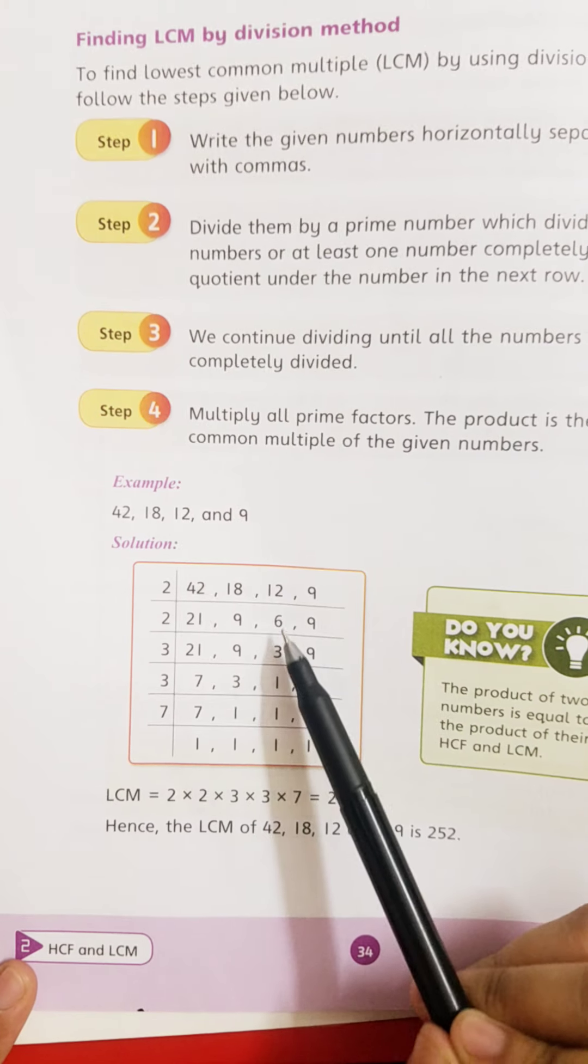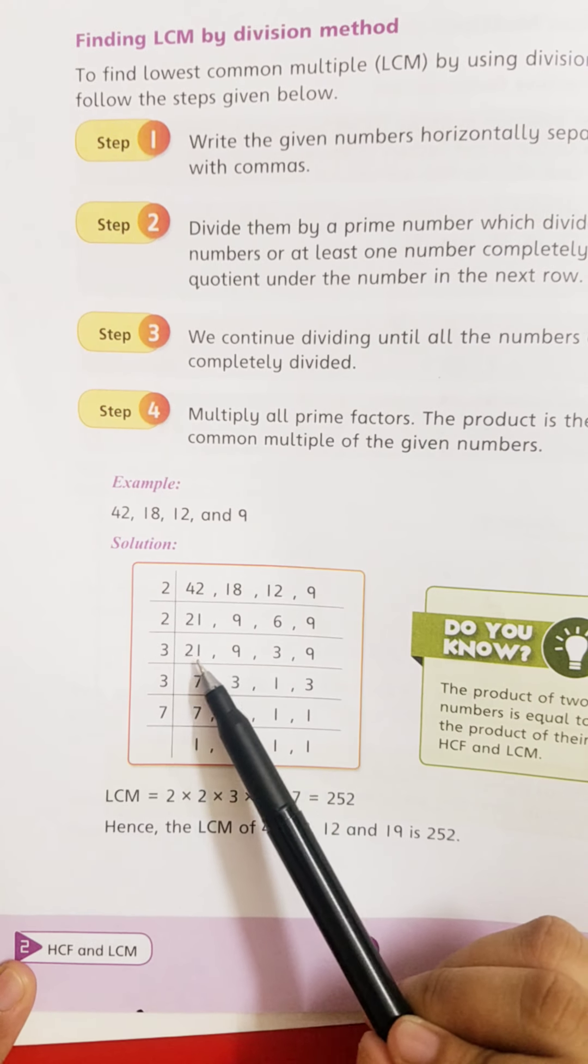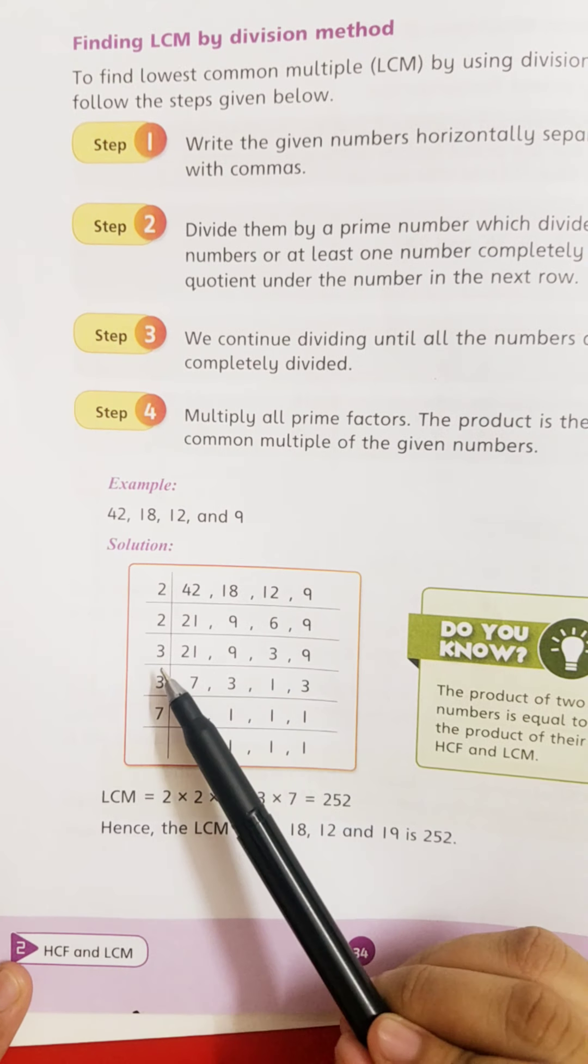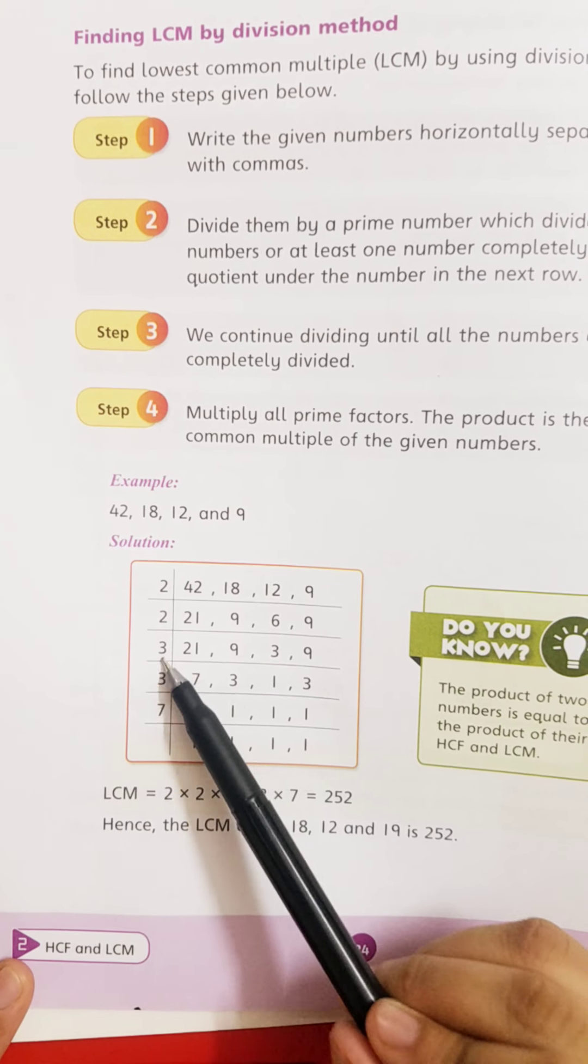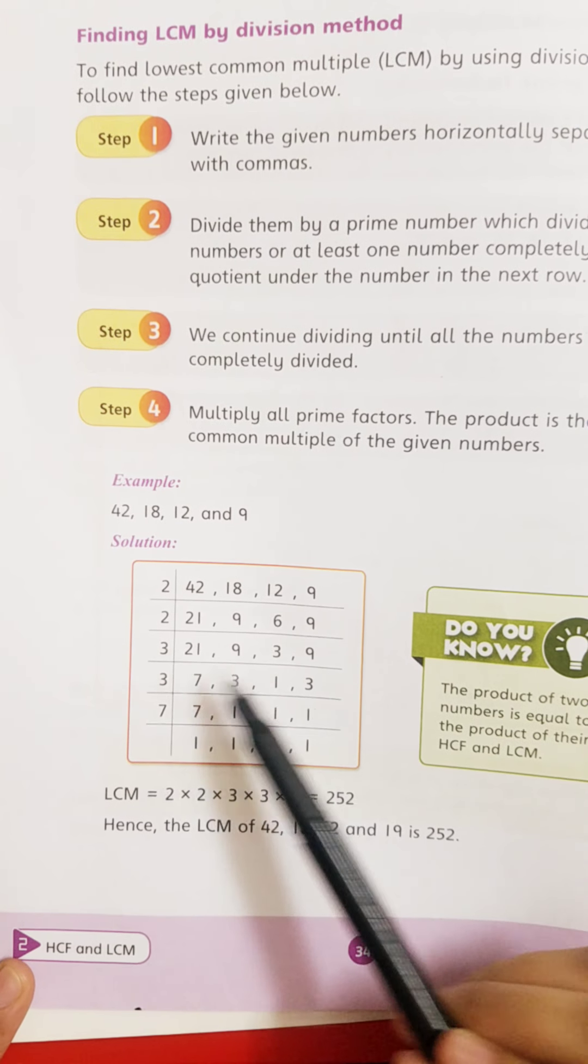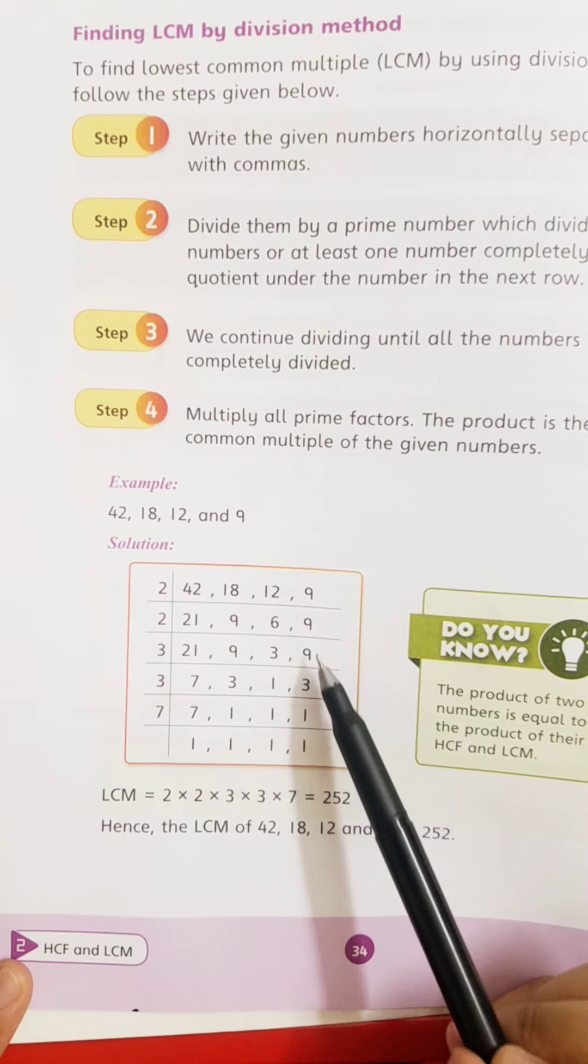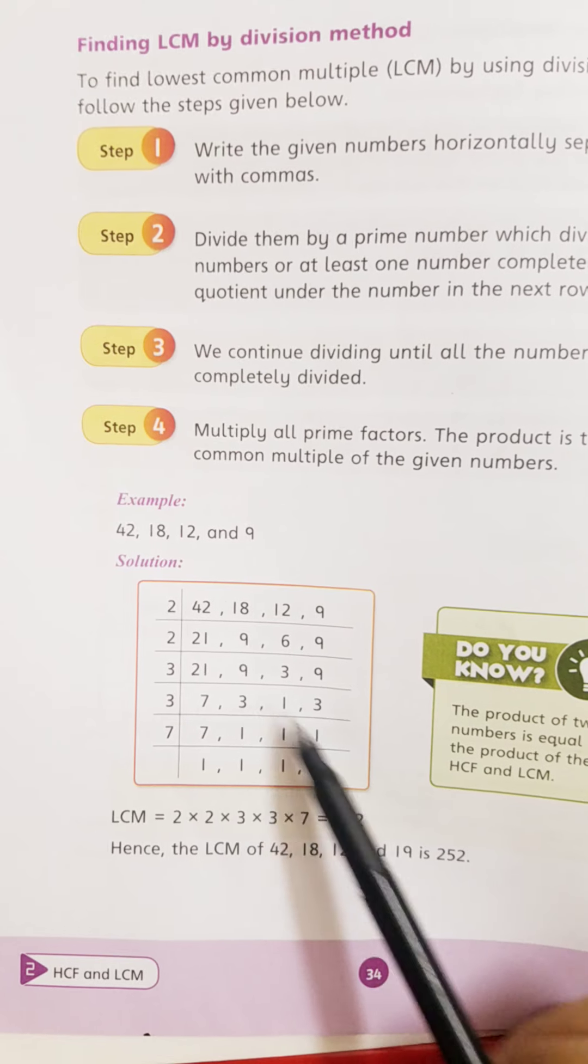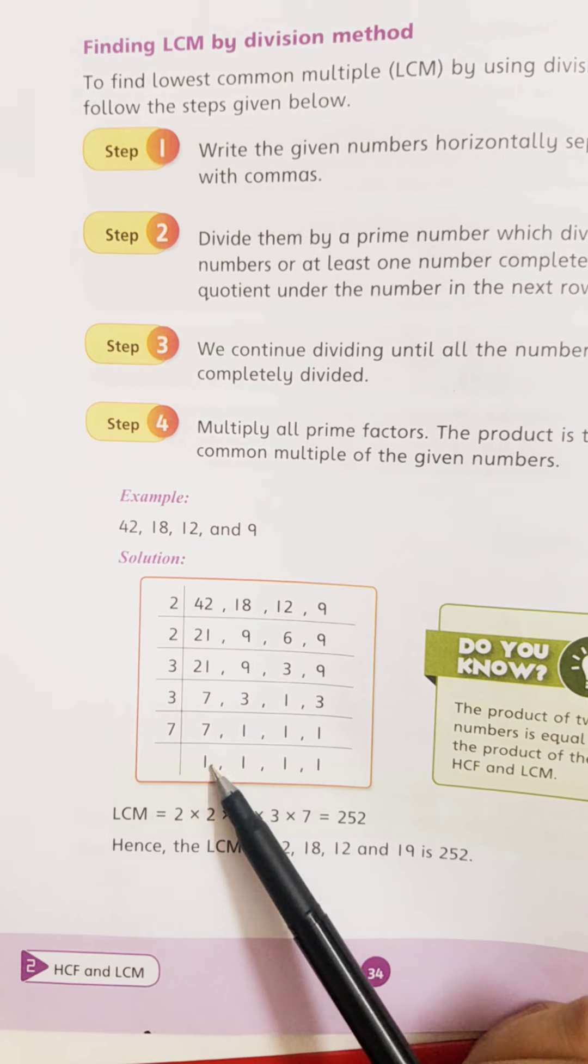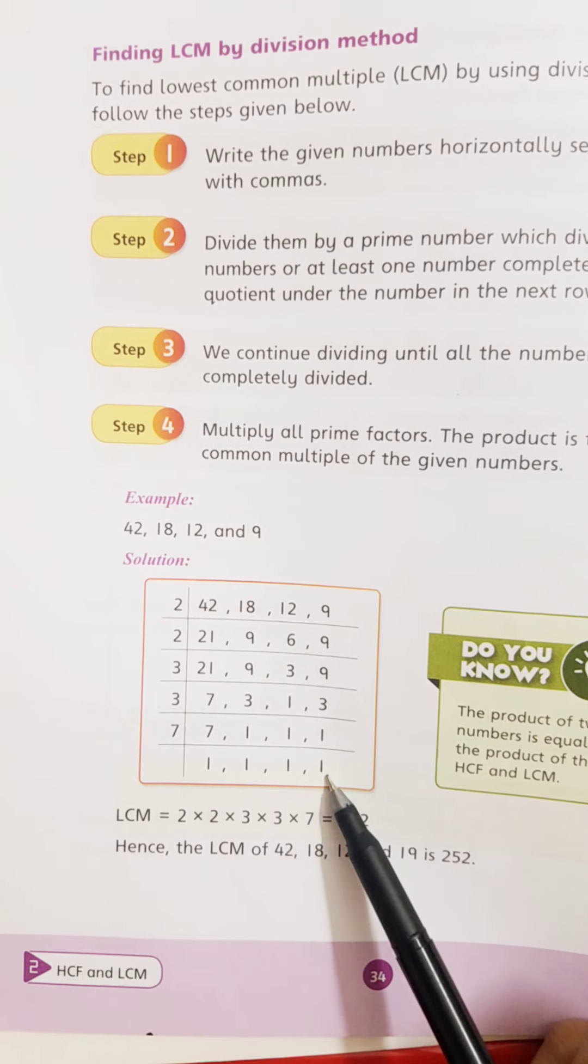2 threes are 6, 2 threes are 6. 3 sevens are 21, 3 threes are 9, 3 ones are 3, 3 threes are 9. Again divide: 3 ones are 3, 3 ones are 3. Write 7 as it is. 7 ones are 7, ones remain the same.